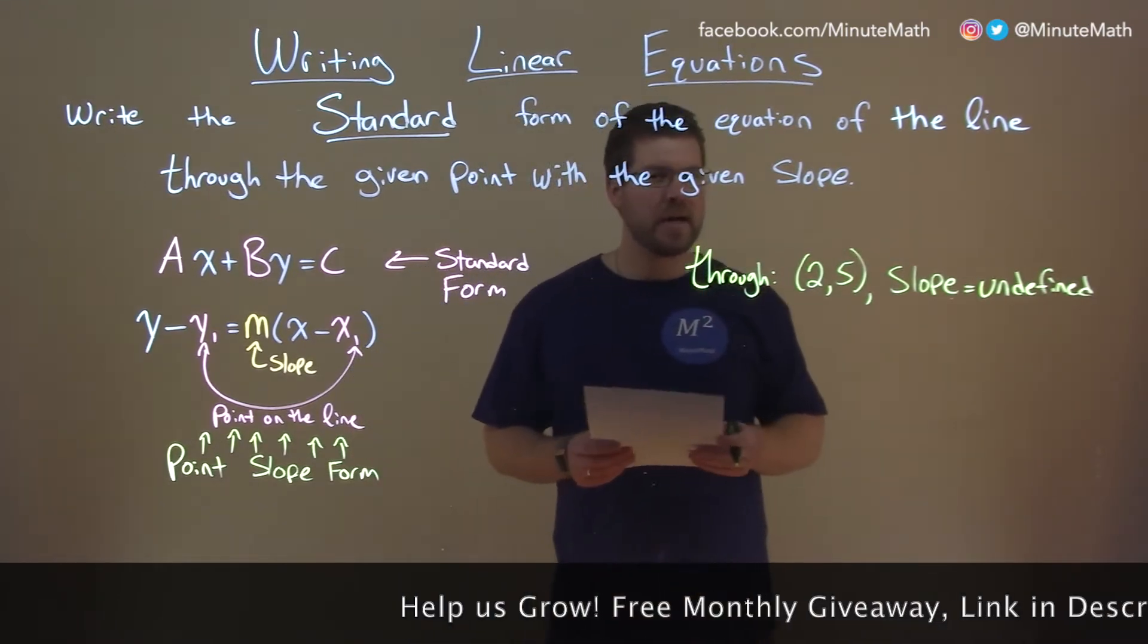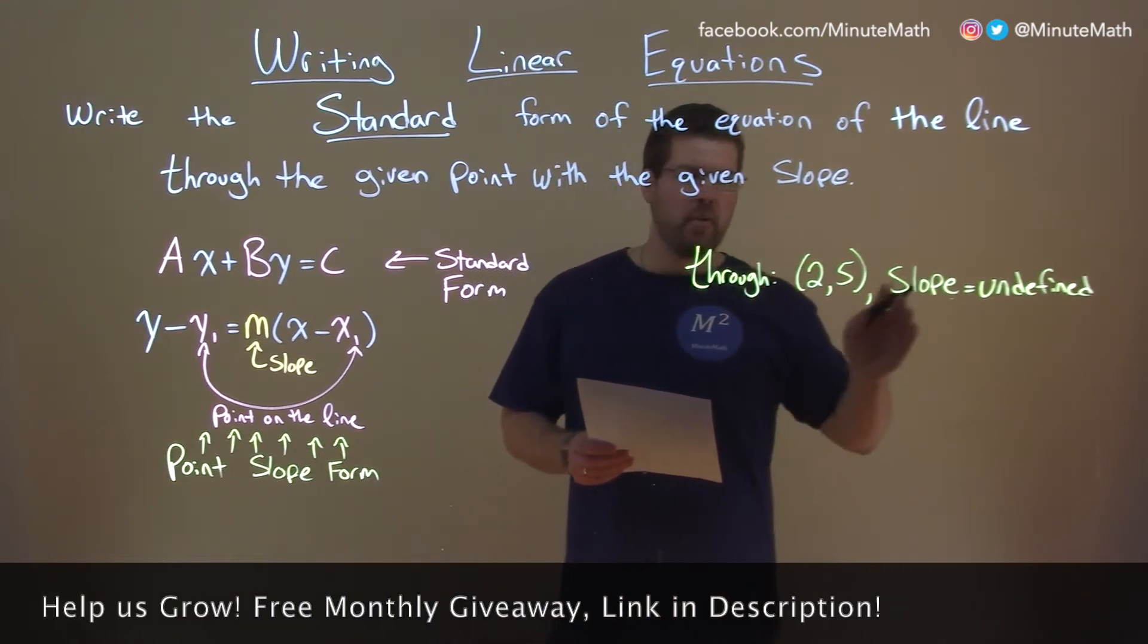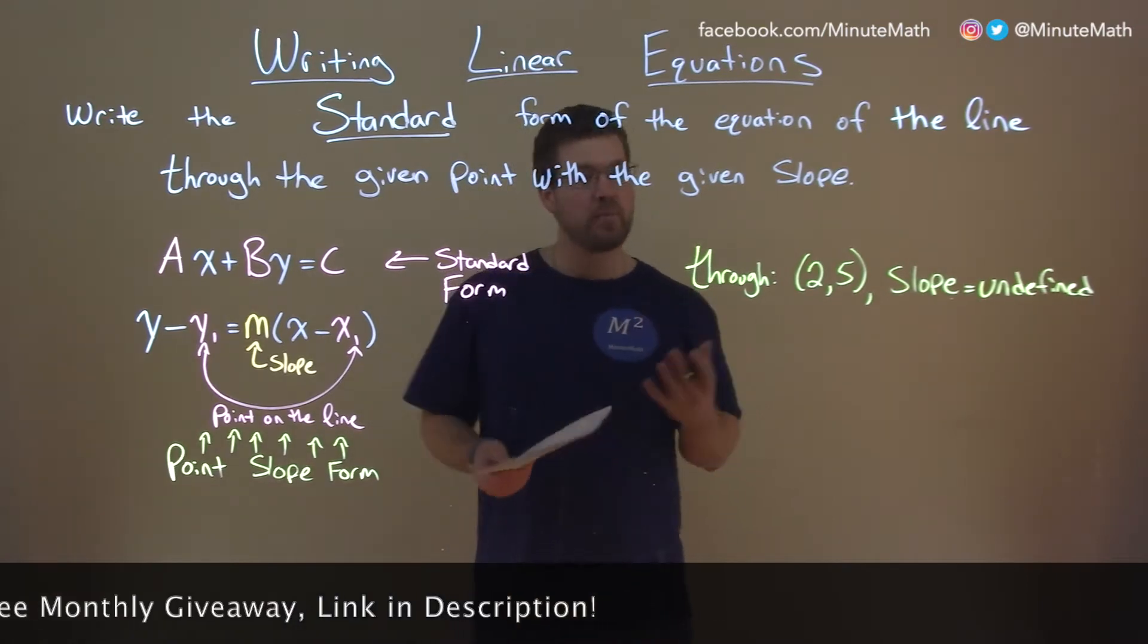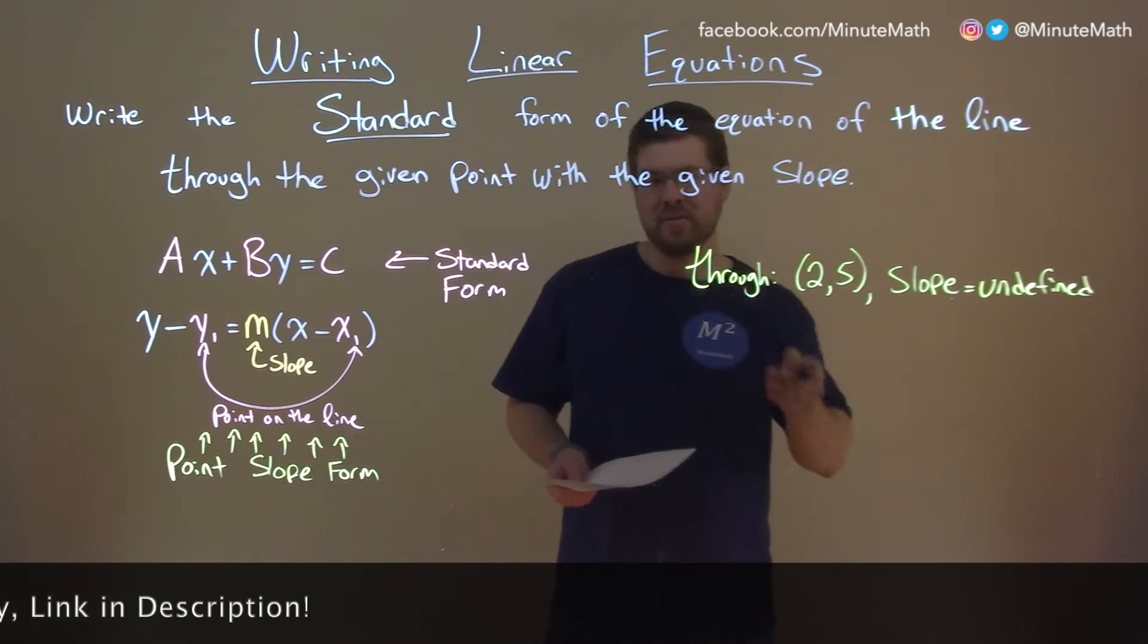This one's actually kind of tricky, but once you understand it, it's very easy. With a slope as undefined, we can't really write a slope down, so our normal process here of using point-slope form really doesn't work.